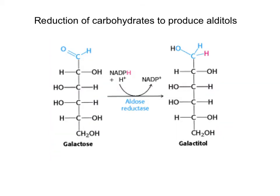Galactose is one of the components of lactose, a disaccharide found in milk. Upon hydrolysis of lactose, a free unit of galactose and one of glucose are released. The metabolism of galactose requires the interconversion of galactose into glucose. If the enzyme that converts galactose into glucose is missing, galactose is toxic. Excess galactose can be reduced to form an alcohol group that can produce cloudiness of the lens of the eye.